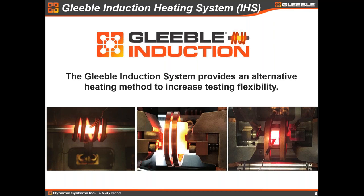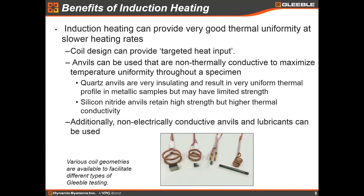Very briefly, I'd like to talk about another way we have introduced in the last couple of years of doing uniaxial compression testing in the Gleeble: the Gleeble induction system. Induction gives us a couple of benefits. One, we can use very different anvil materials — such as quartz or silicon nitride anvils — that can give a little better thermal gradient. We can also use different coil geometries to try to adjust the thermal gradient in the sample and get very good results. We'll probably have another webinar on induction heating, so I won't belabor this point.